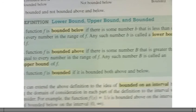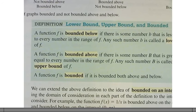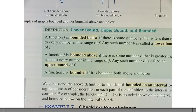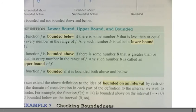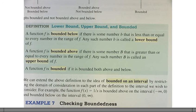So this is the formal definition, and I'll just read it to you real quick. This is based on the graphs that we just looked at. A function is bounded from below if there is some number B that is less than or equal to every number in the range of F. Any such number B is called a lower bound of the function.